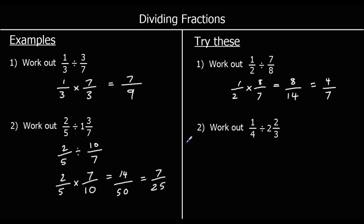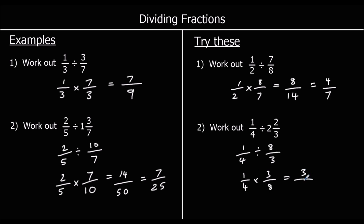Question two: first change two and two-thirds into a top-heavy fraction. Two threes are six, plus two is eight, so it's eight-thirds. So we have a quarter divided by eight-thirds. Dividing by eight-thirds is the same as multiplying by three-eighths. Times the top: one times three is three. Times the bottom: four times eight is thirty-two. So the answer is three over thirty-two.